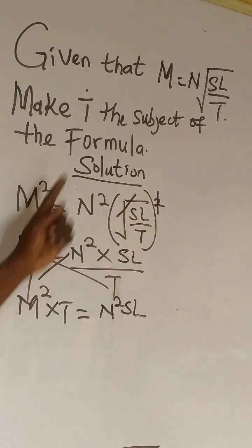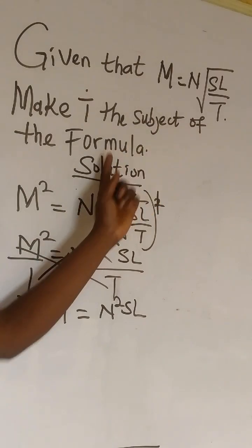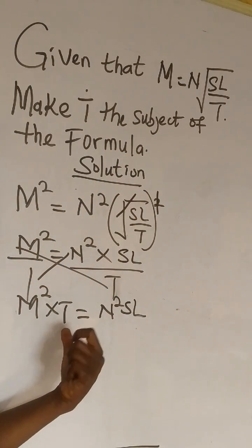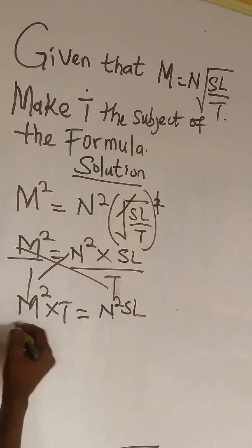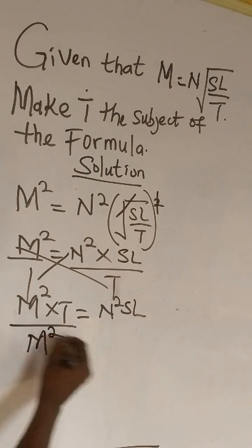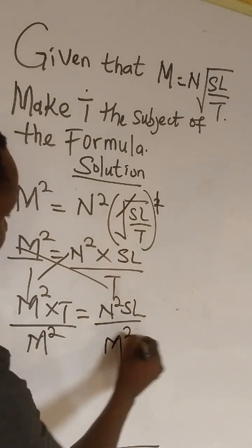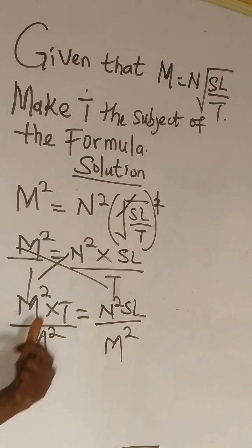Our question is to make T the subject of the formula. That means the unknown here is T. M squared becomes a variable or a coefficient. So we divide both sides by the coefficient of T.